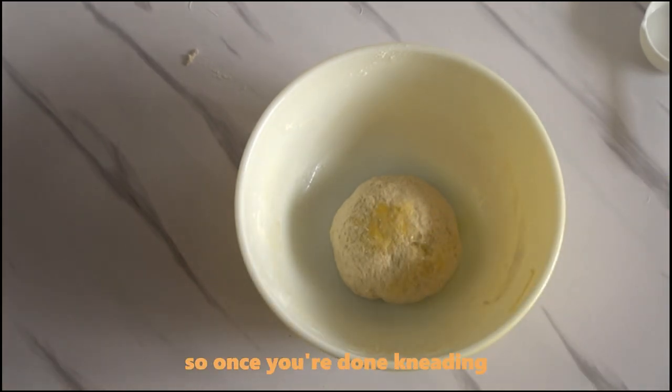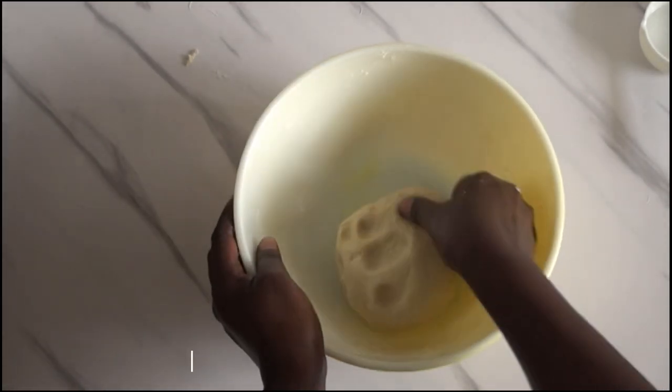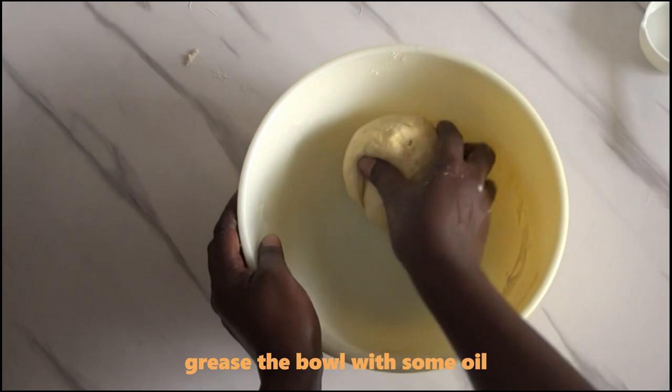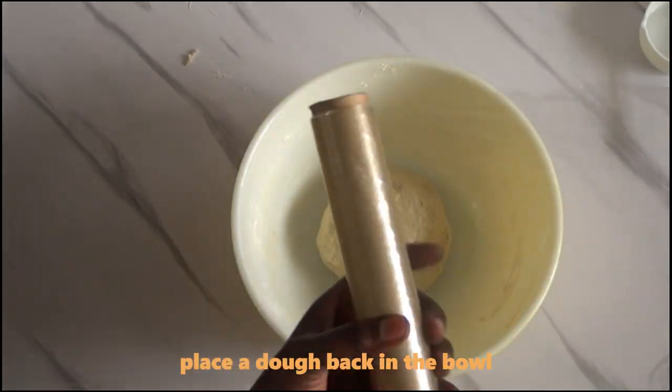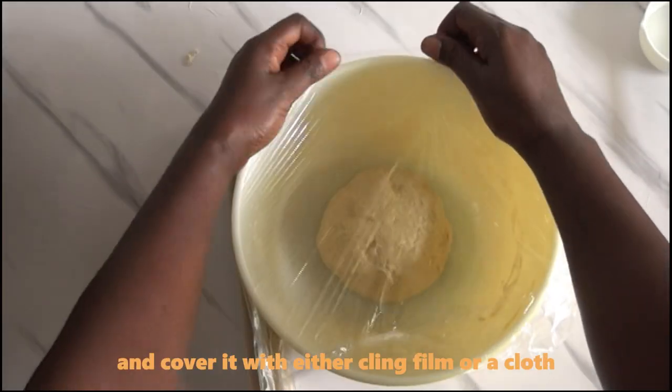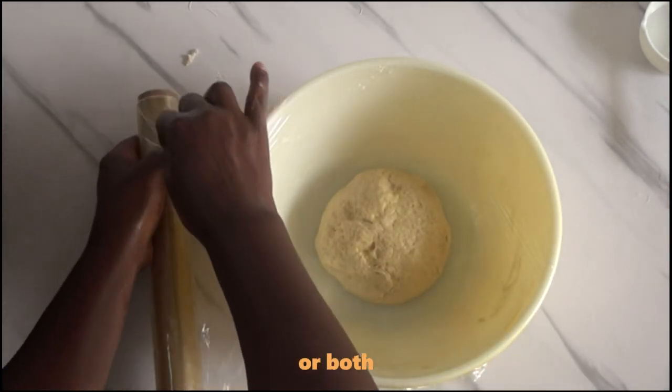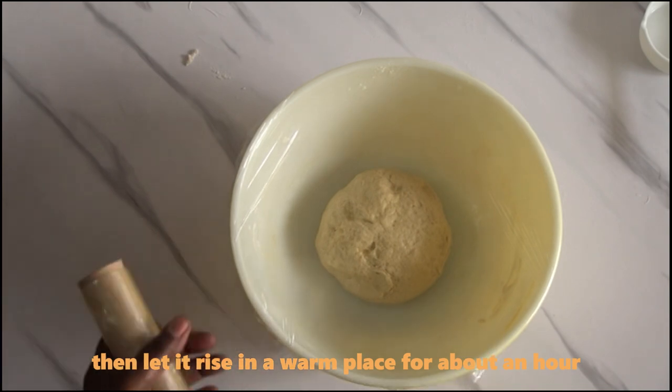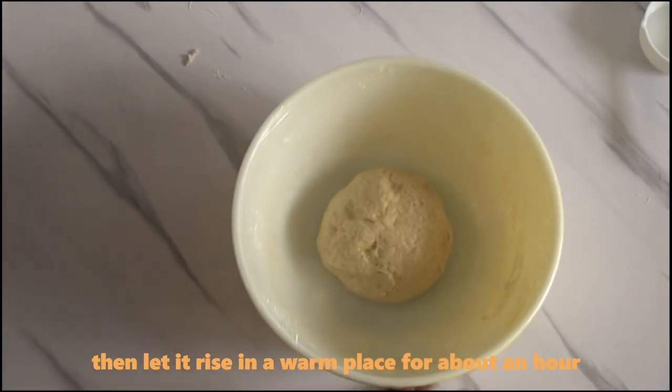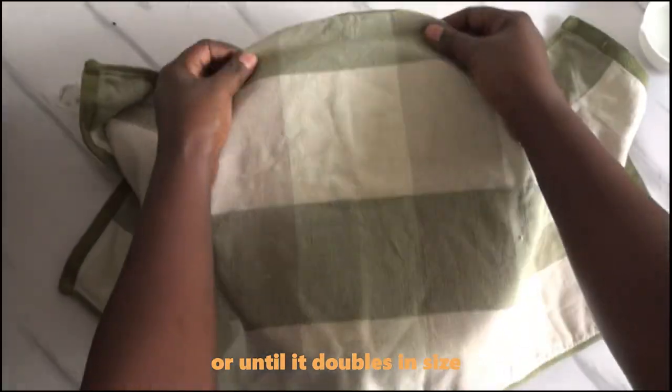Once you are done kneading, grease the bowl with some oil, place the dough back in the bowl, and cover it with either cling film or a cloth or both. Then let it rise in a warm place for about an hour or until it doubles in size.